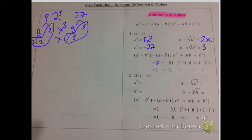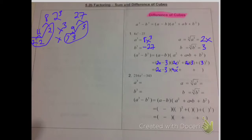So we have a as 2x and b as 3. Filling it all in: 2x minus 3, times 2x squared plus 2x times 3, plus 3 squared. Solving it out, you get 2x minus 3 times 4x squared plus 6x plus 9. So 8x cubed minus 27 is factored down to 2x minus 3 times 4x squared plus 6x plus 9.